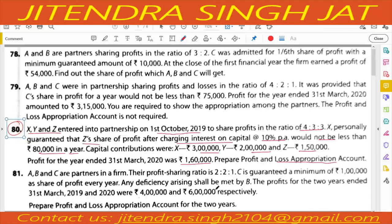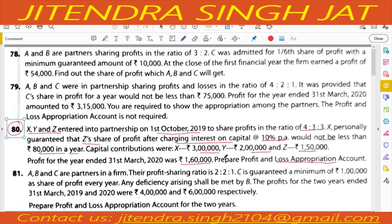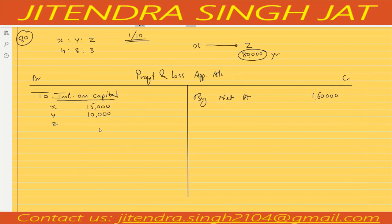For Y: 2 lakh at 10 percent is 20,000, half is 10,000. For Z: 1 lakh 50,000 at 10 percent is 15,000, half is 7,500. Total interest on capital is 15,000 plus 10,000 plus 7,500 equals 32,500.